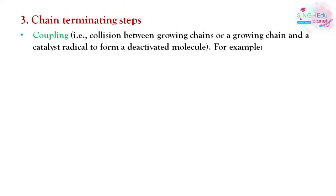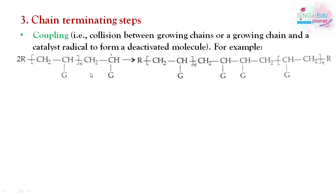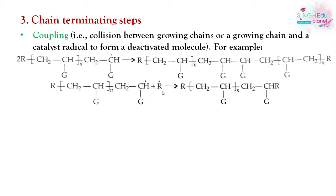The third step is the chain terminating step. Termination can occur in three ways. First is coupling — collision between two growing chains, or between a growing chain and a catalyst radical. When two growing chains collide, they combine to form a deactivated molecule. Similarly, a growing chain and a catalyst radical can combine to form a deactivated molecule.